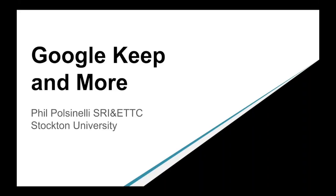What we'll be talking about today are sort of lesser-utilized components of Google. There's still a lot more that we have yet to cover, but these are a few. These are some of the ones that I've found to be a lot more useful than some others. One that I'm starting to use a lot right now is Google Keep — it's becoming my go-to application for a number of things. So I'm going to start with Google Keep, and then we're going to move on to some other things.